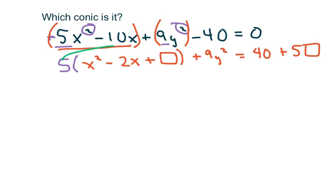Because remember, we're adding 5 times this. So if you add that to the left side of the equation, you have to add it to the right side of the equation. So let's complete the square. Half of 2, or half of negative 2, take half of it and square it, and you get 1. So basically what we get is 5 times x minus half of 2 is 1, squared plus 9y squared equals 45.